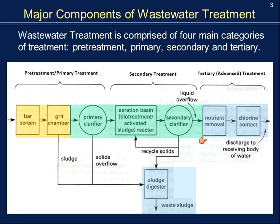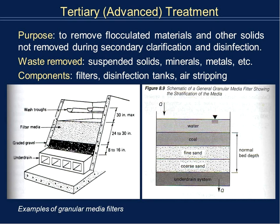Today we're going to look at tertiary, or the third type of treatment, which we often call advanced treatment because not everybody uses it. We'll look at items such as nutrient removal and chlorine contact for disinfection. We're also going to talk about the sludge digester — what happens to all of that solid material that we remove. The main purpose of tertiary treatment is to remove any material not removed so far, typically through another clarification and disinfection. What we remove are suspended solids, minerals, and metals — much more fine material at the molecular level. Major components are filters, disinfection tanks, and air stripping, which removes gases we don't want in the system.